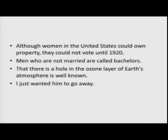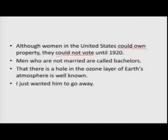For example: 'Although women in the United States could own property, they could not vote until 1920.' There are two verbs: 'could own' and 'could not vote.' The first clause, 'although women in the United States could own property,' is dependent — it does not convey complete sense. 'They could not vote until 1920' is the independent clause. When you have such a relationship, one clause — most often the independent clause — carries more importance. For example: 'Men who are not married are called bachelors' — 'who are not married' is a relative clause modifying the subject.